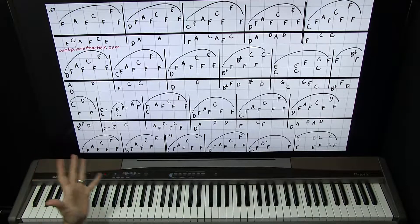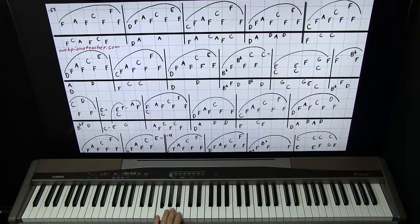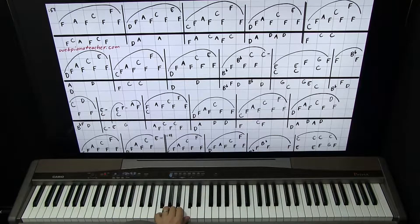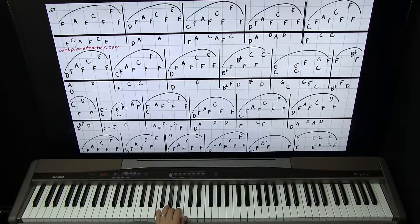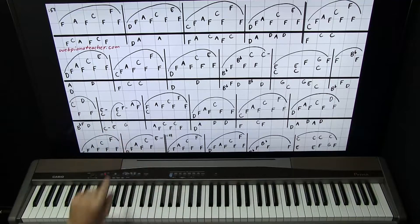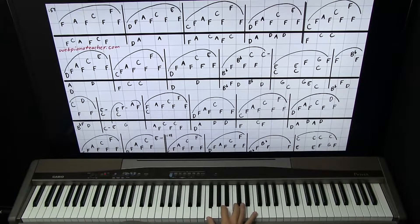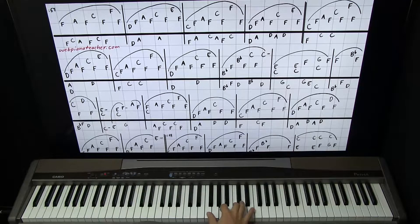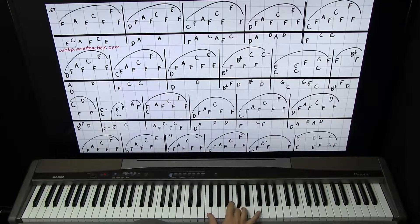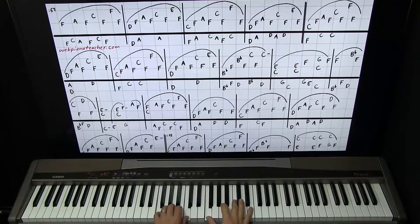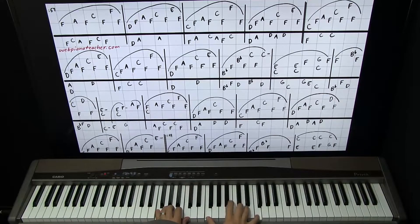So we'll have an F chord in the left hand. I'll start by putting 5-3-1 on F-A-C. So we have 1 and 2 and 3 and... The right hand is going to have an F chord as well. I'm going to do 1-2-3-5 on F-A-C-F. Just hold the pedal down for that whole measure. So 1 and 2 and 3 and 4 and. Now we're going to go to D minor.